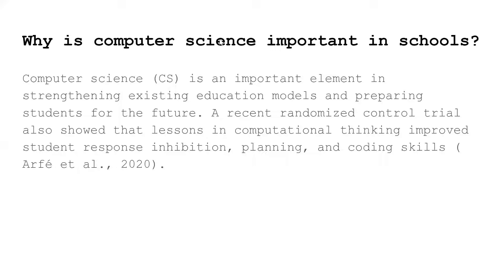Why is computer science important in schools? It is an important element for strengthening existing education models and preparing students for the future. A recent randomized control trial showed that lessons in computational thinking improve students' response inhibition, planning, and coding skills — related not only to computer science but to other subjects and real-world problem solving. Computer science allows students to relate learning to many other aspects of life and subjects. There is a lot of cross-curricular integration happening in computer science, which is why it is so important.